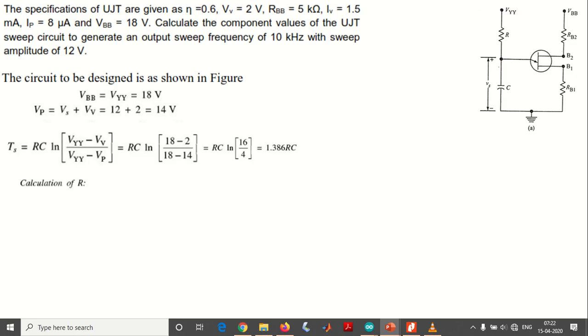Let us calculate this value capital R. For calculating this, we consider the maximum value: R max equals VBB minus VP by IP. This is the standard formula to be remembered to find the value of R.